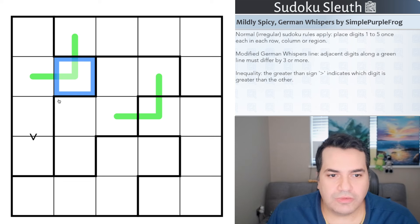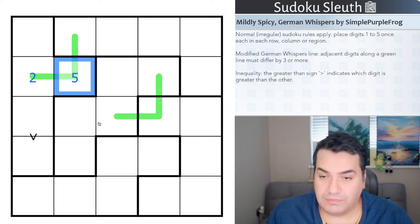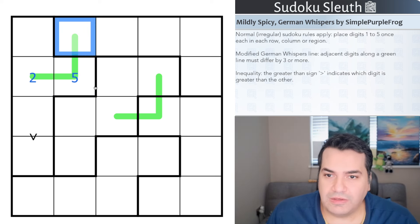So adjacent digits along the green line must differ by three or more. If I go with my favorite digit here, two, then this would have to be five—it would have to be exactly five because that's the only digit that is three or more away. This would have to be one or two, both of which are allowed because it's in a different region, different row, different column. That would be a valid set of pencil marks for this particular German whisper line, and then we have a second one in here.